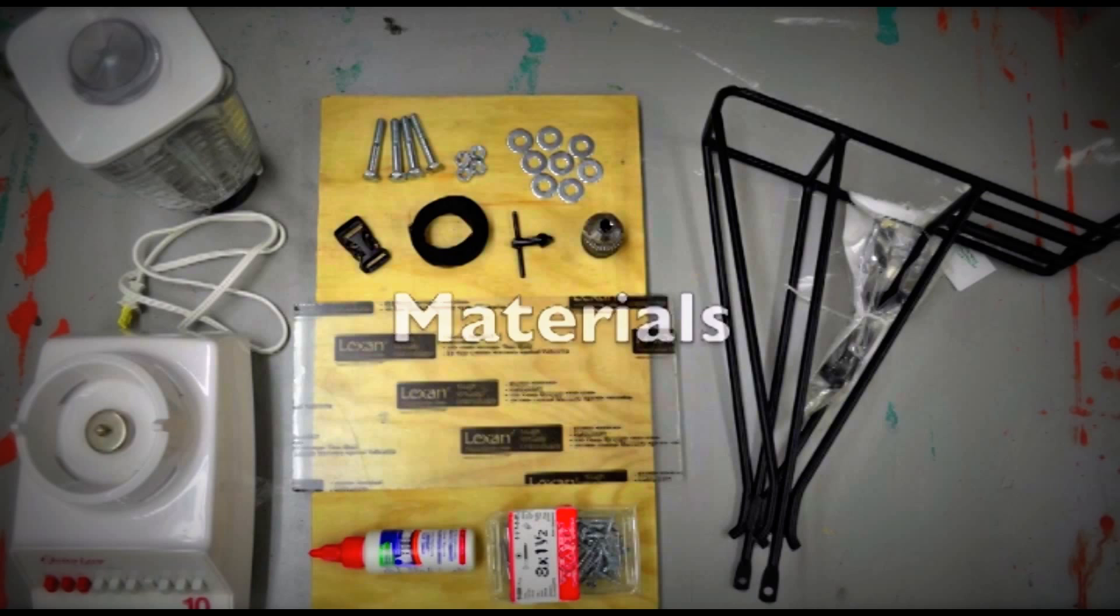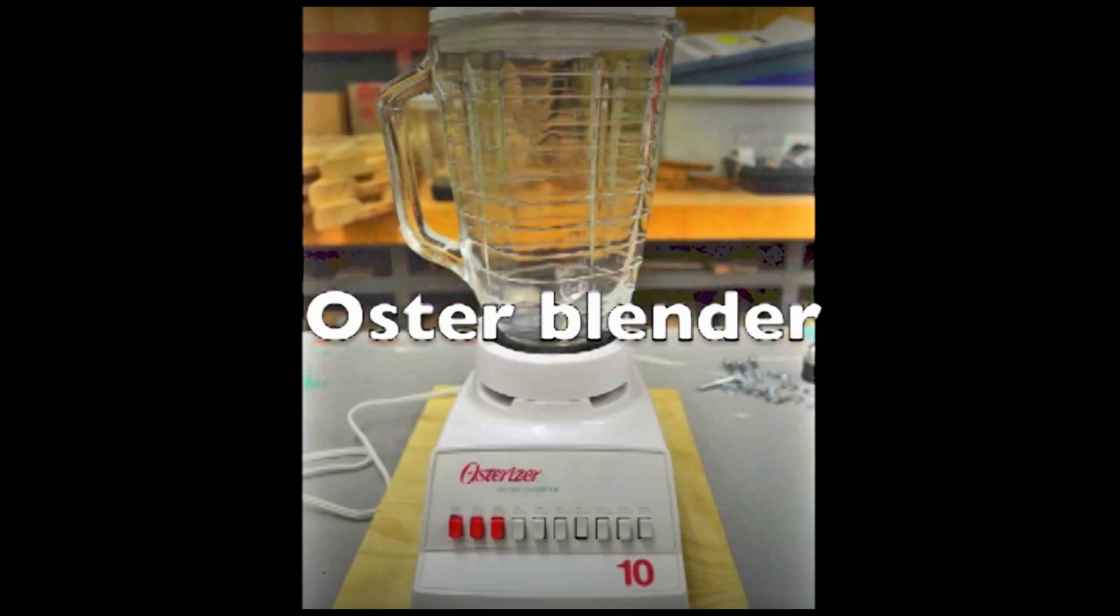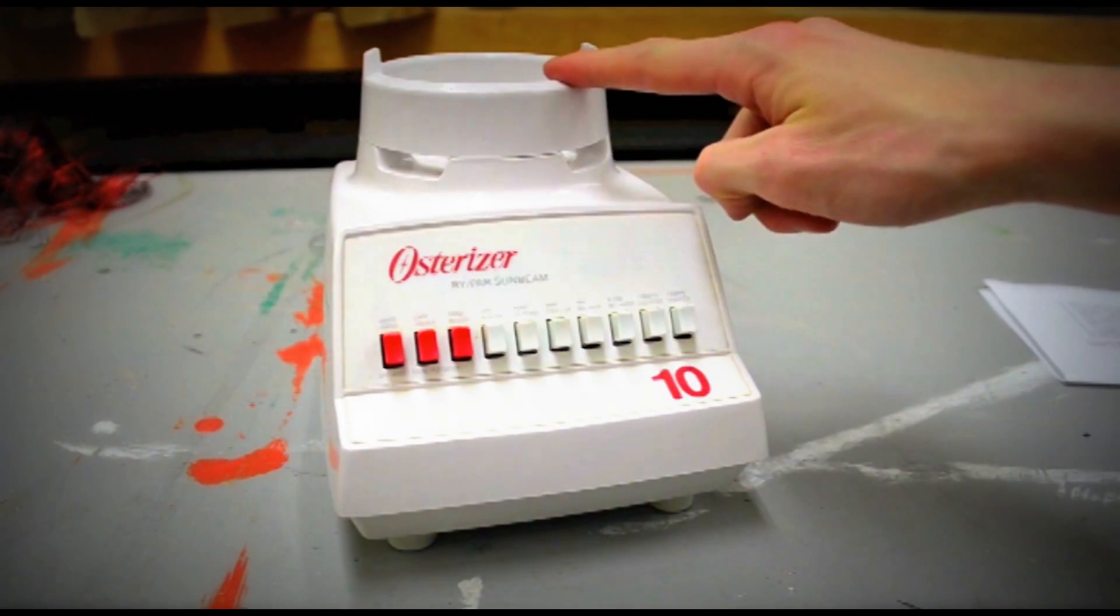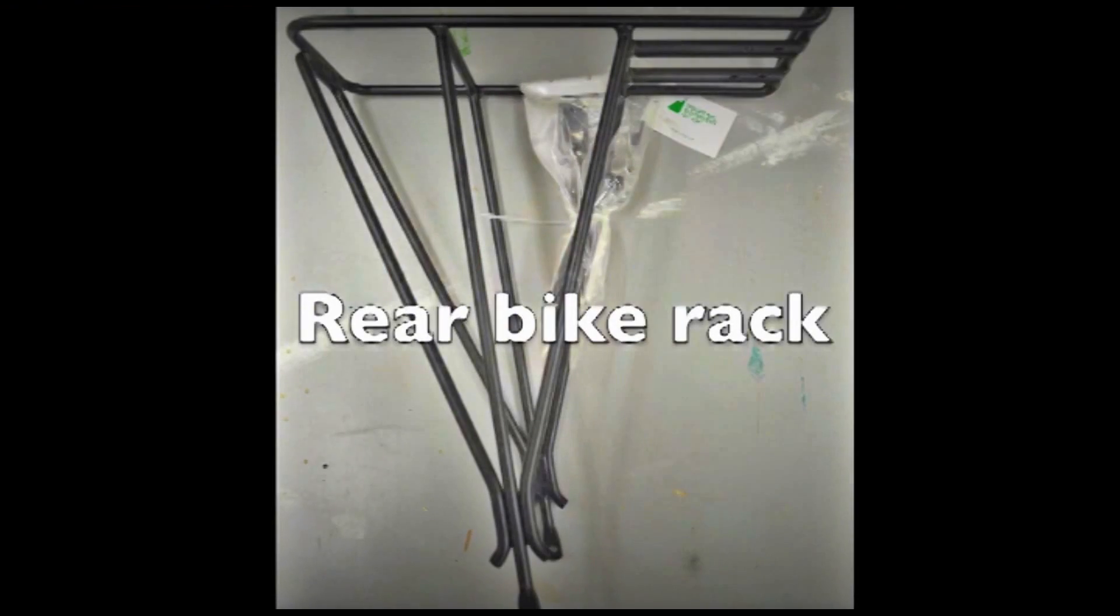In addition to a road bike and a stationary trainer stand, you'll need the following materials. An Oster brand blender, make sure it's the old style with a detachable plastic ring at the top. A rear bike rack.